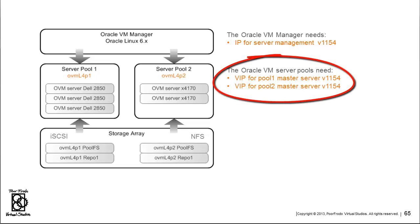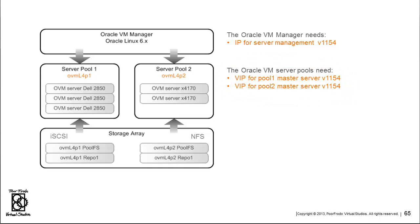We'll also need IP and host names to use as virtual IPs or VIPs for pool 1 and pool 2. The VIP is managed by the cluster, not the Oracle VM manager, and it's automatically assigned or moved to different Oracle VM servers as needed by the agent on the Oracle VM servers. That's why we can lose the manager and your server pools and VMs will remain running. If you lose a server while you don't have a manager running, all the HA-enabled virtual machines will still automatically move over to other servers in the pool, even though the manager is not around.